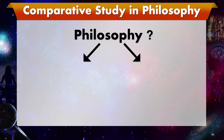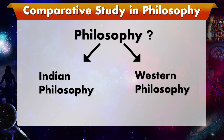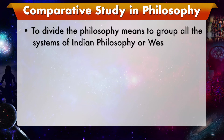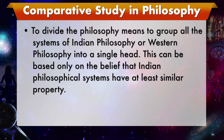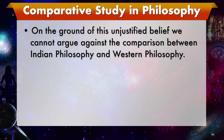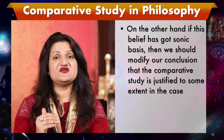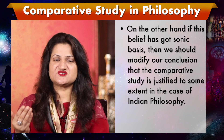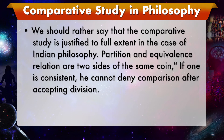The supporters of non-comparative study favor the division of philosophy into two disjoint subclasses of Indian philosophy and Western philosophy, but they deny comparison. They cannot do this. To divide philosophy means to group all the systems of Indian philosophy or Western philosophy under a single head. This can be based only on the belief that Indian philosophical systems have at least some similar property. Either this belief is without basis, or it has some reasonable basis. In the former case the very division of philosophy into two classes is not justified, and on the ground of this unjustified belief we cannot argue against comparison between Indian philosophy and Western philosophy. On the other hand, if the belief has some basis, then we should not merely say that comparative study is justified to some extent — we should rather say that comparative study is justified to its full extent in the case of Indian philosophy.